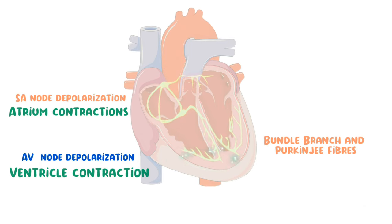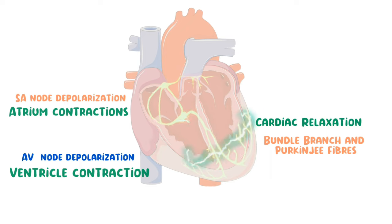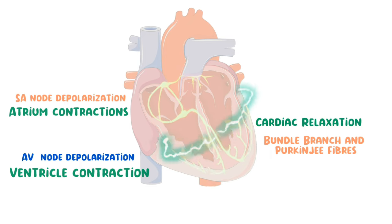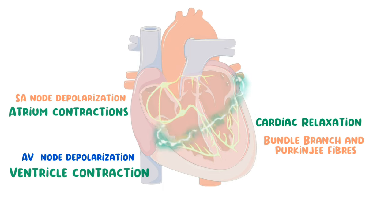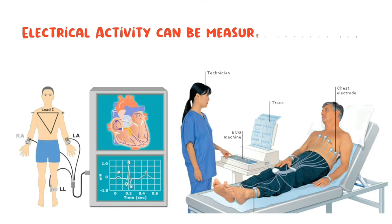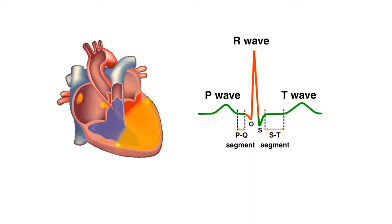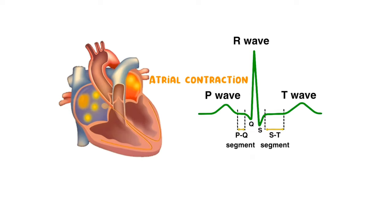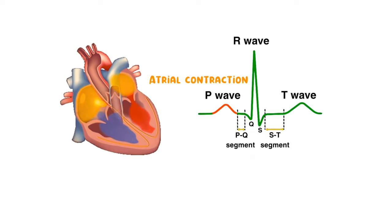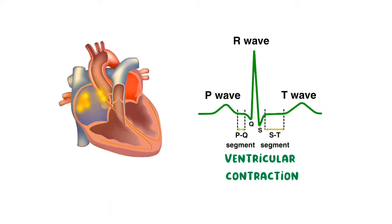The electrical activity of the SA node and AV node can be measured with the help of an ECG. SA node depolarization causes the P wave, AV node depolarization causes the QRS wave, and complete cardiac diastole causes the T wave.